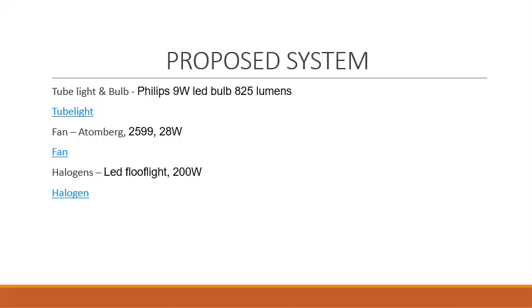The changes that we have made: the tube lights and bulbs that were given in the initial system, we are going to replace both of them by a Philips 9 watt LED bulb that is giving out 825 lumens, which is in the range of the initial tube lights and bulbs. So it won't be reducing the intensity, but it will just be reducing the power requirement for the light. The change in the fan is that we are installing a new fan that is Atomberg, and its power requirement is 28 watts, and it is also operated by a remote control.